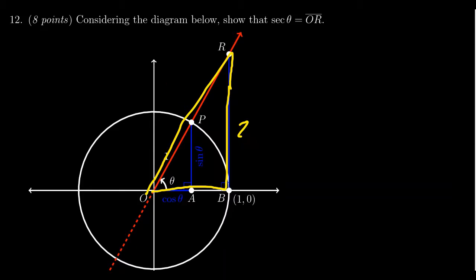We want to argue, using similar triangles, that the hypotenuse OR is equal to secant theta. We're going to use a similar triangle argument.